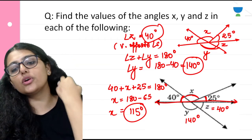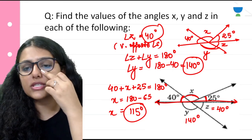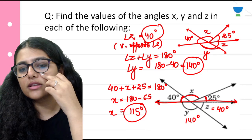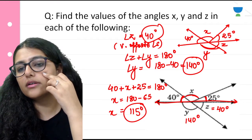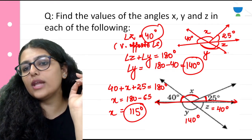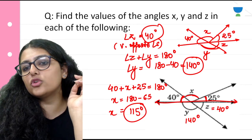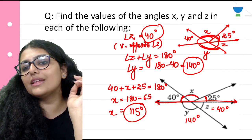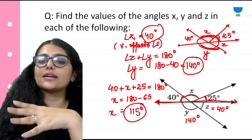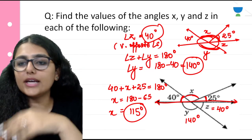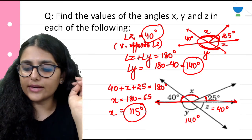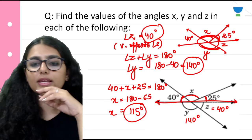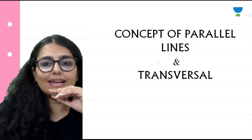You can use other methods also. For example, since these two lines intersect this way, angle y and (x plus 25) become vertically opposite angles. So 140 minus 25 gives 115 — same answer. You can verify using different approaches.